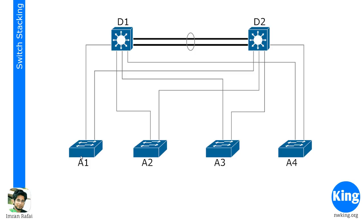Each access layer switch has about 24 ports. So if you want 100 ports, you need to have five 24-port switches. You need to decide whether to go with more numbers of small switches, or have one large switch with maybe 100 ports. You can get a switch with 100 ports — that's possible. So we need to make that decision whether to go with a lot of small switches or one large switch. Both have their own advantages and disadvantages.